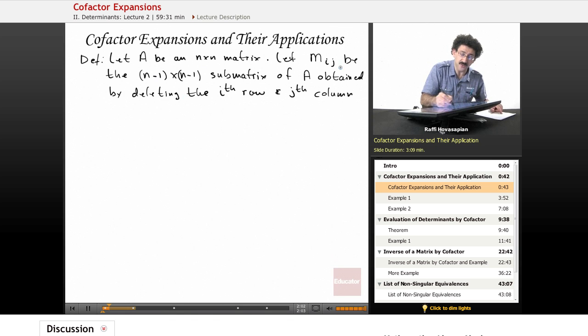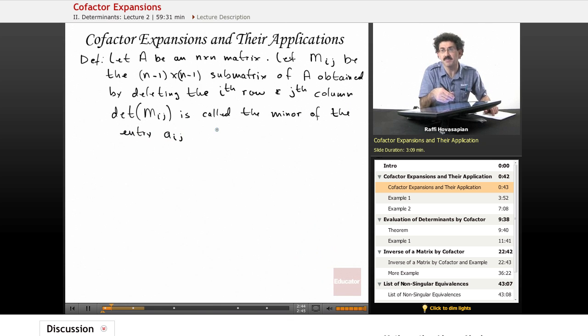Now, let's see, so let A be an n by n matrix. Let M sub ij be the n minus 1 by n minus 1 submatrix of A obtained by deleting the i-th row and the j-th column. Now, the determinant of this M sub ij is called the minor of the entry A sub ij. So, for example, if we had A sub 3, 2, that would be the third column, second entry. We would knock out that row in that column. We would take the determinant of what was left over. And then that's called the minor of that particular entry. And again, we'll do an example and it'll make more sense.